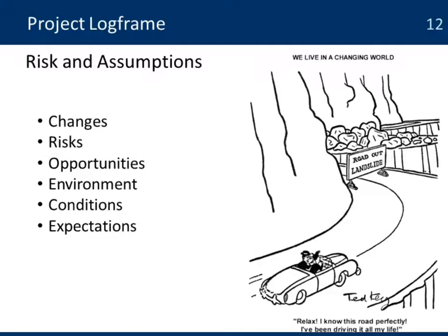The last column in the matrix is where we list the risks and assumptions, especially assumptions. They help us understand if there are going to be any changes, any risks, opportunities, what is happening, any modifications in the environment, what are the conditions and any expectations that people have about the project. That is also the column that helps us validate another element of the logical framework.